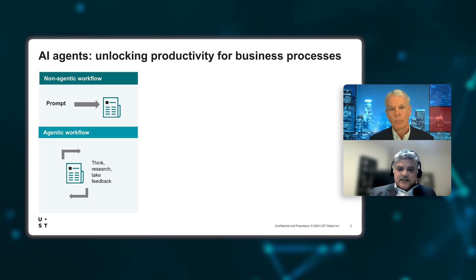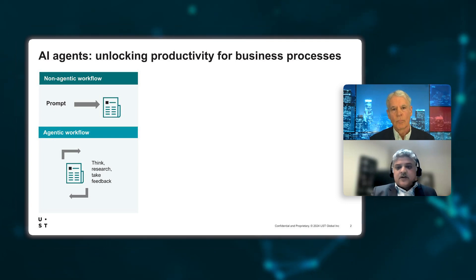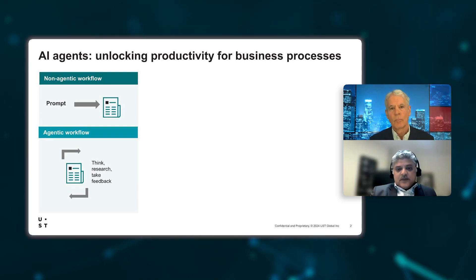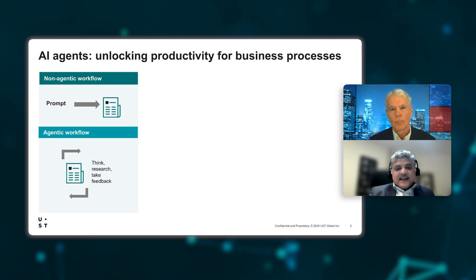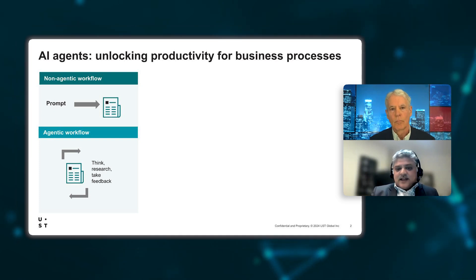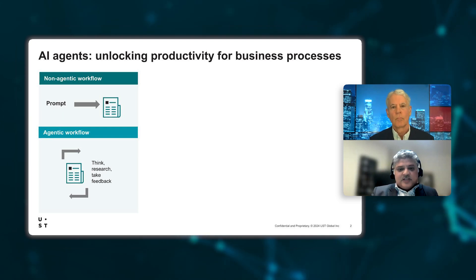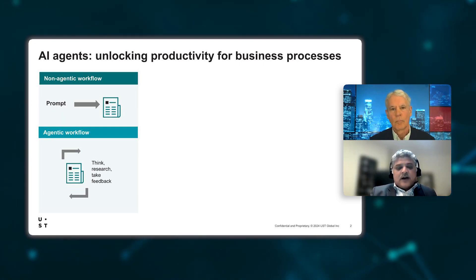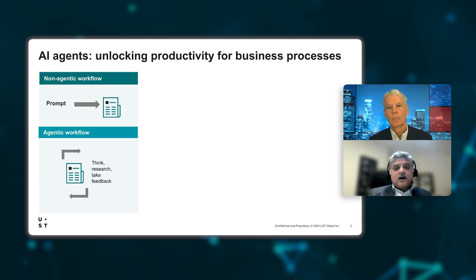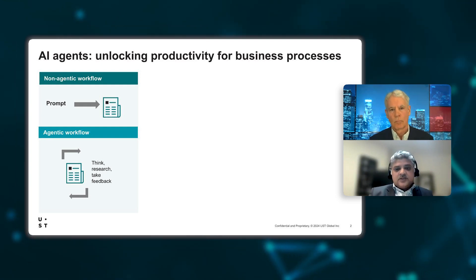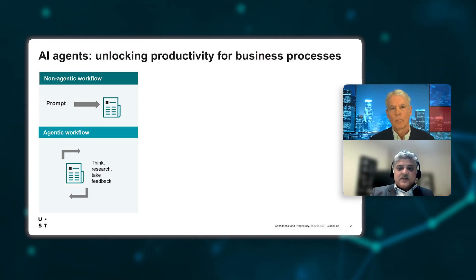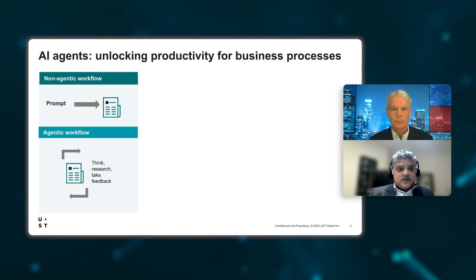ChatGPT systems are reactive in nature. Where there's limited interaction, the scope also gets more limited. With each query, context resets unless explicitly maintained by the system or the session. These systems actually lack decision-making capabilities and don't prioritize tasks or reason about how to achieve goals autonomously. Whereas agentic AI is proactive and can handle complex scenarios requiring independent judgment and execution. Agentic AI learns from its environment, can draw on past experiences, and even pursues goals without continuous user intervention.